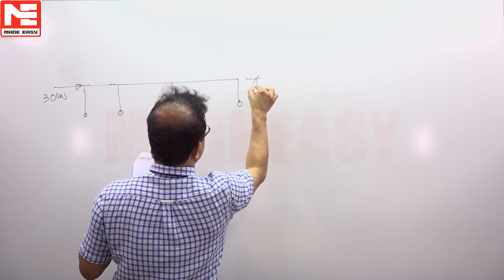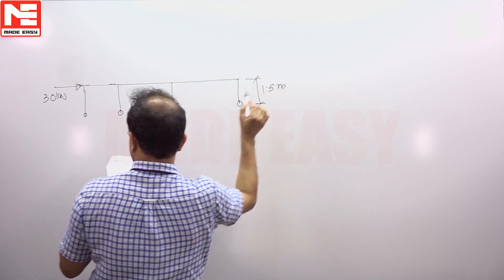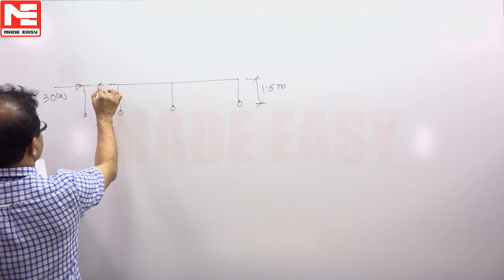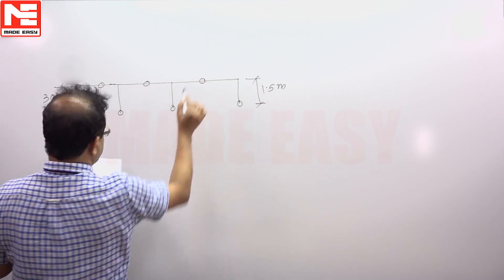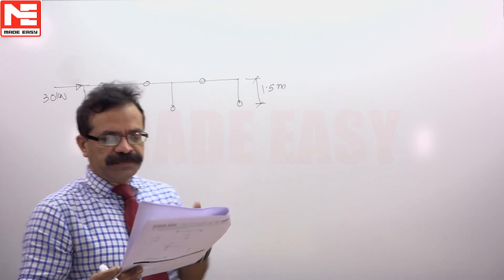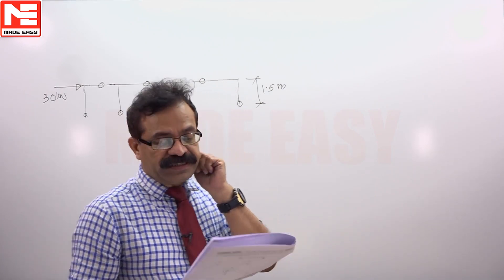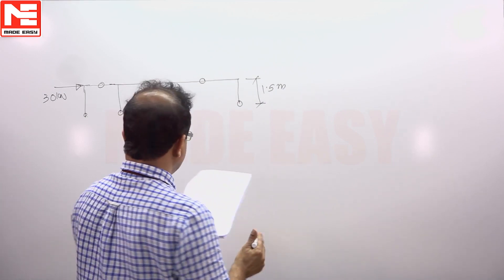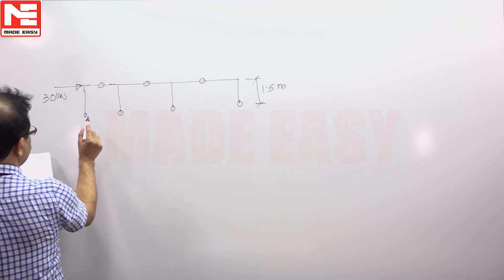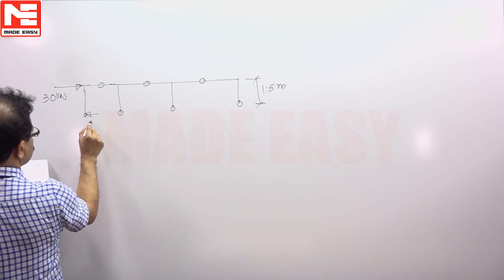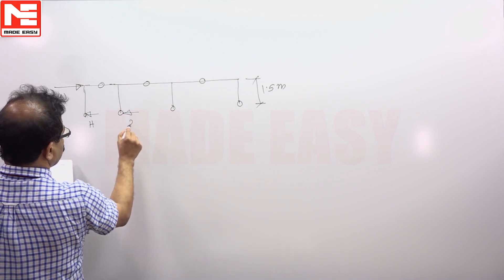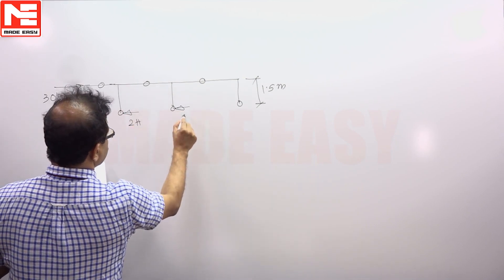This means you can take it as 1.5 meters at the midpoint of each beam and column. We have to assume that an imaginary hinge or internal hinge, then each external column takes h, internal column takes 2h as the horizontal shear.